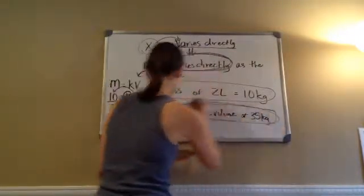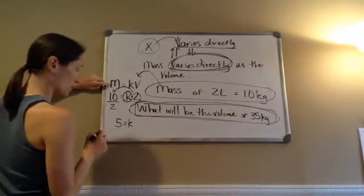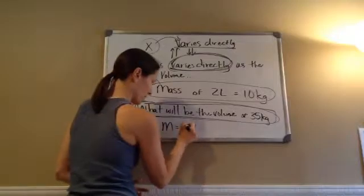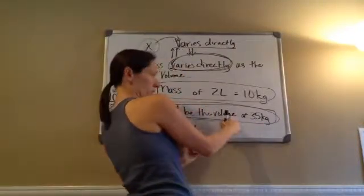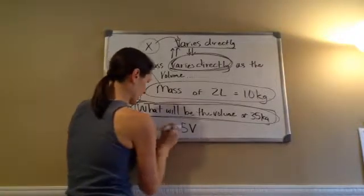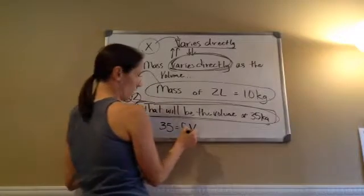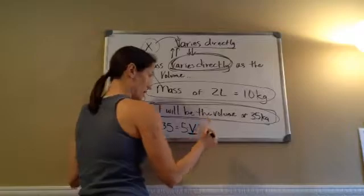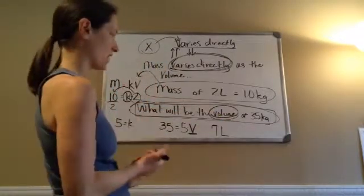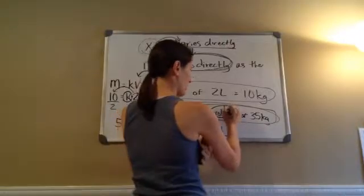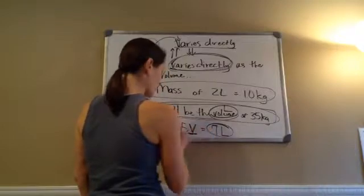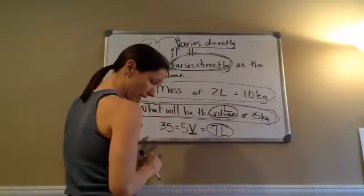Now we're going to answer the question using the same equation: M equals KV. We insert K equals 5. They're asking what is the volume of 35 kilograms, so the mass is 35. That gives us 5 times what equals 35? Seven is the answer. Because it's volume, we're working with liters, so seven liters is our answer.